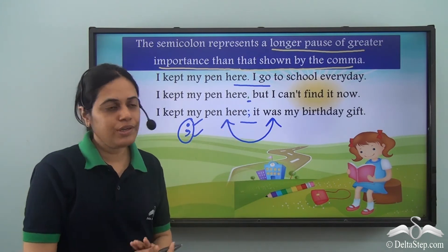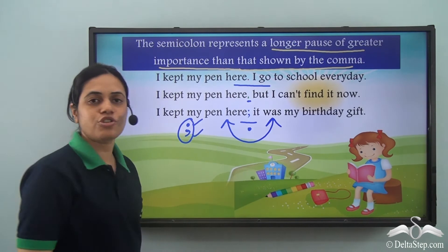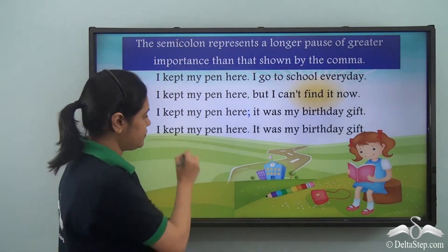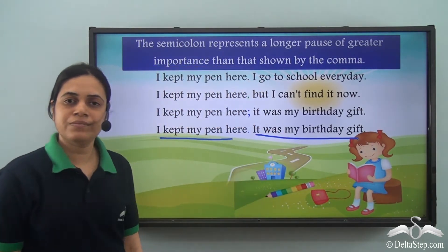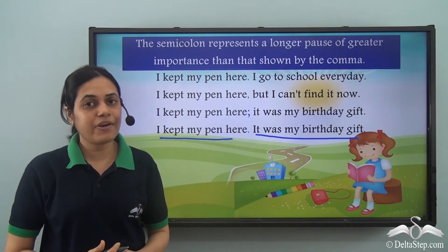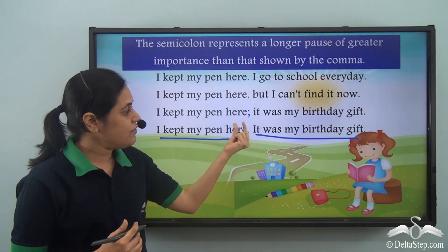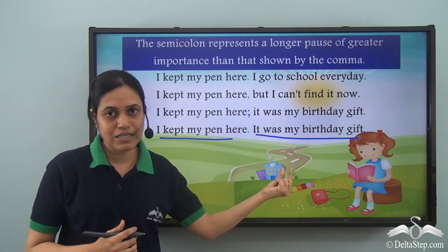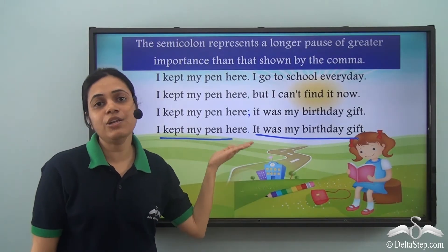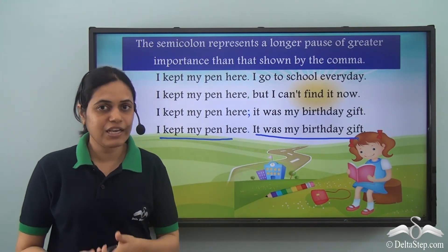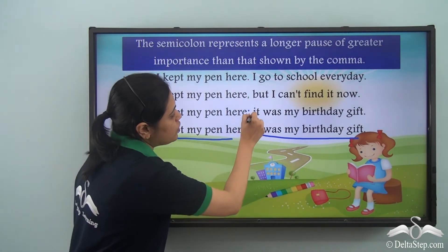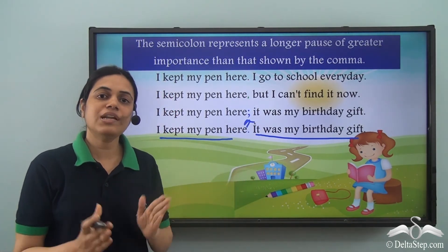If I remove the semicolon and write the sentences using a full stop: 'I kept my pen here. It was my birthday gift.' These are two independent sentences and they make perfect sense. When we have two independent sentences which can stand alone and there is nothing grammatically wrong, we can write them as two independent sentences, but we use a semicolon to join them to show the relation between them.